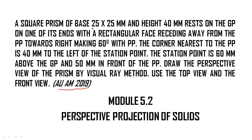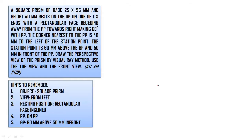Square prism of base 25mm by 25mm and height 40mm. Condition: it is resting on one of its ends with a rectangular face inclined away from the PP towards the right making 60 degrees with PP. The corner nearest to PP is 40mm to the left of the station point. The station point is 60mm above GP and 50mm in front of PP. Draw the perspective of the prism by visual ray method using the top view method.